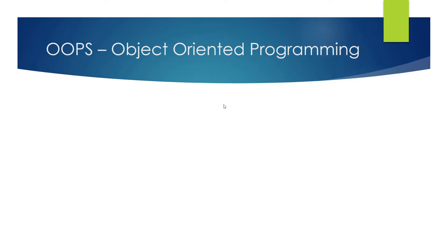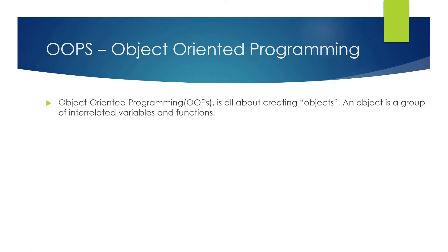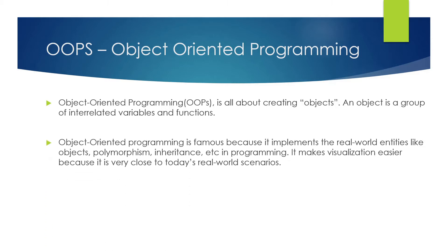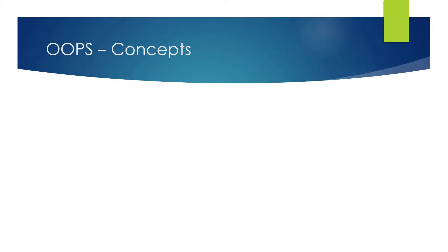The first thing in OOP — object-oriented programming system — is all about creating objects. An object is a group of interrelated variables and functions, and these are created within a class. Object-oriented programming is famous because it implements real-world entities like objects, polymorphism, inheritance, encapsulation, etc. in your program, making visualization easier because it's very close to real-world scenarios.